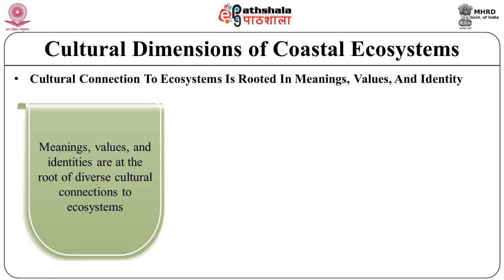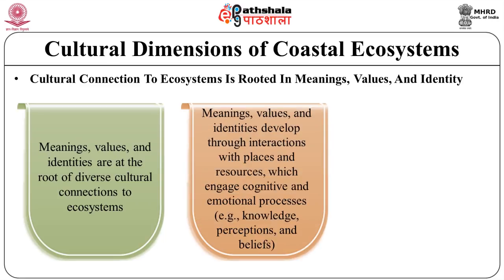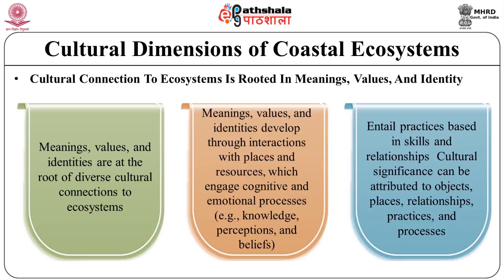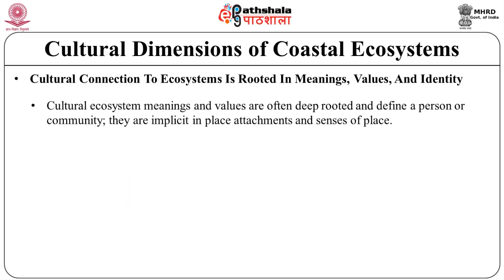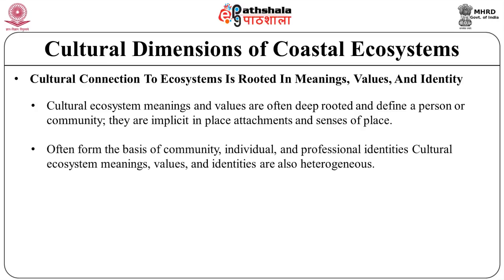These are the roots of the diverse cultural connection to ecosystems. They develop through interaction with place and resources, which engage cognitive and emotional processes — for example, knowledge, perceptions and beliefs — and entail practices based on skill and relationship. Cultural significance can be attributed to objects, places, relationships, practices and processes. Cultural ecosystem meanings and values are often deep-rooted and define a person or community. They are implicit in place attachments and senses of place, and often form the basis of community, individual and professional identities.